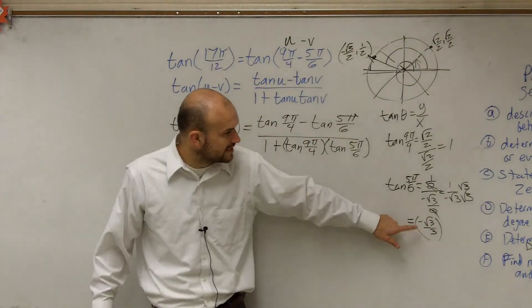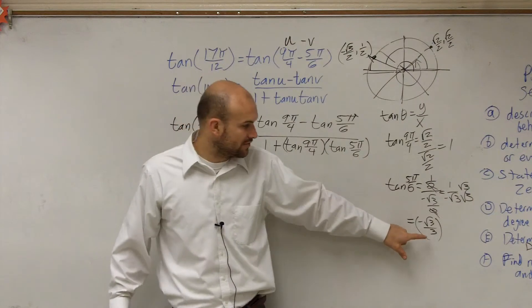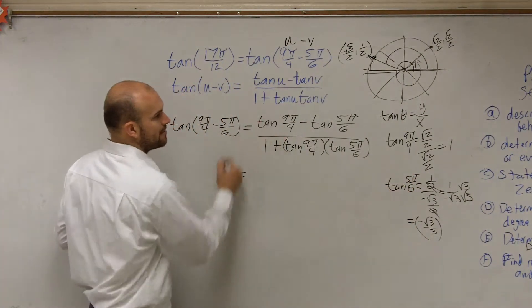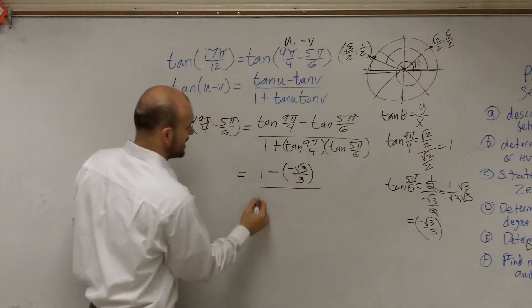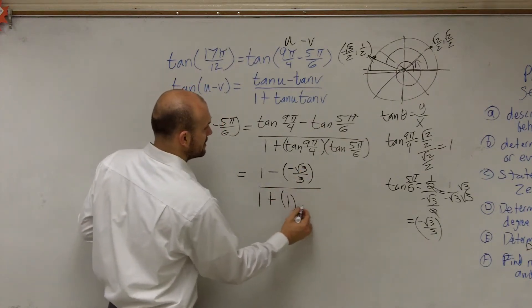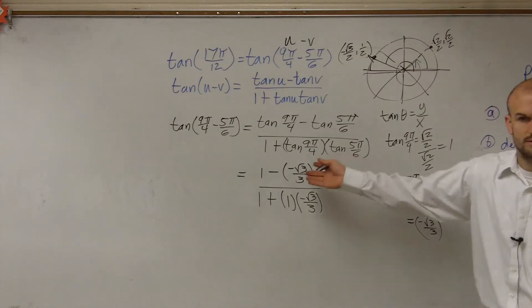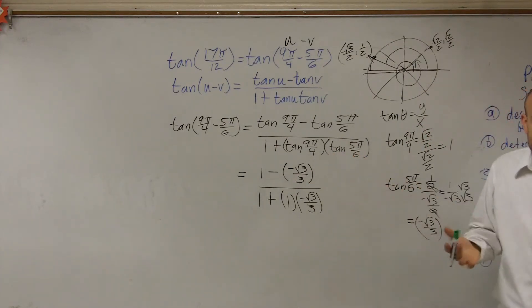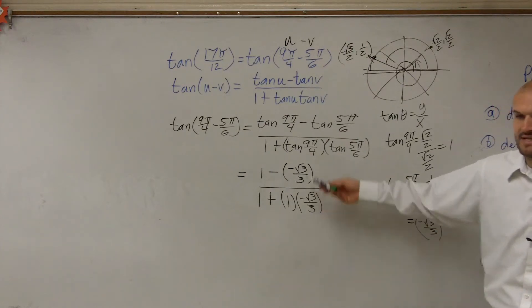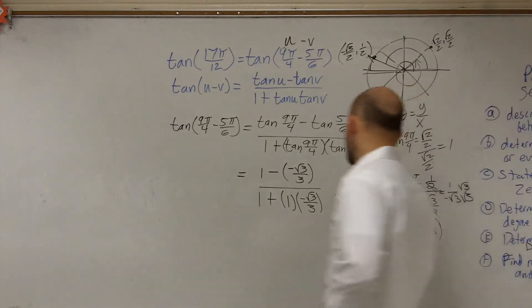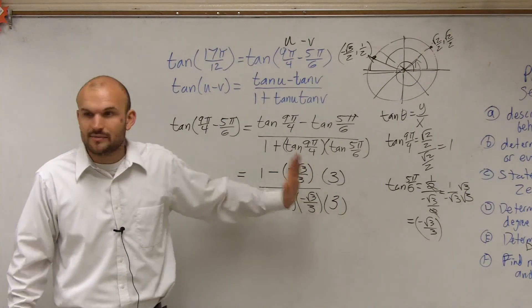Now I'm going to plug in 1 for the tangent of 9π/4, and negative √3/3 for the tangent of 5π/6. So the expression becomes: 1 minus (−√3/3) in the numerator, divided by 1 plus 1 times (−√3/3) in the denominator. We now have a fraction divided by another fraction, so we need to clear those fractions.